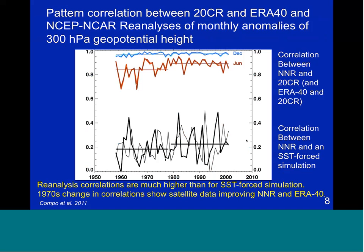We're also interested in this dataset for climate. One way to look at that is to look at the pattern correlation between monthly anomalies. Here I'm showing those correlations for geopotential height between 20CR and ERA-40, and between 20CR and NCEP-NCAR reanalysis, for the 300 hPa geopotential height as a function of time for December in blue and June in red/orange. December correlations are the highest and June correlations are the lowest, and there is a general increase around 1979 where correlations become higher as the upper air-based datasets improve with satellite data.